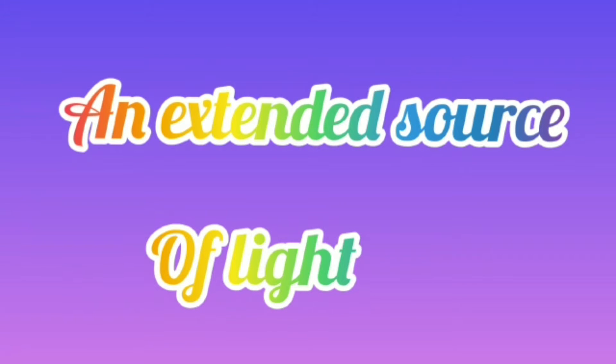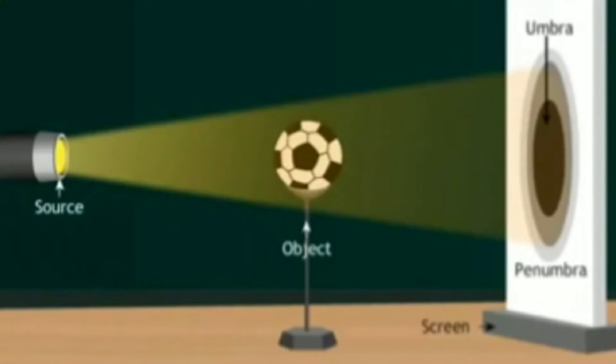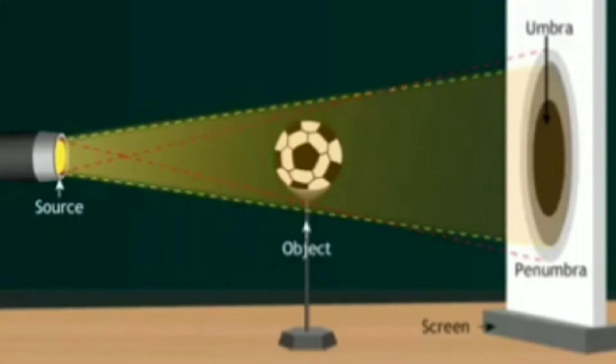This dark shadow is nothing but the umbra formed due to the point source of light. Now, let us study an extended source of light. Place a ball fixed on a stand and a screen in front of it such that the screen is bigger than the height of the ball. Light a torch from the other side of the ball and observe its shadow formed on the screen. Umbra is the part in complete darkness and receives no light from the torch.